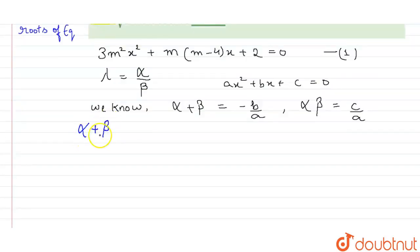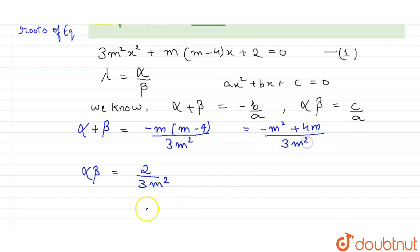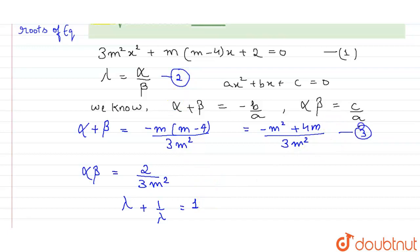According to the equation given to us, alpha + beta = −b/a = −m(m−4) / 3m², and alpha·beta = c/a = 2 / 3m². We can write alpha + beta as (−m² + 4m) / 3m². The condition given to us is lambda + 1/lambda = 1, where lambda = alpha/beta.